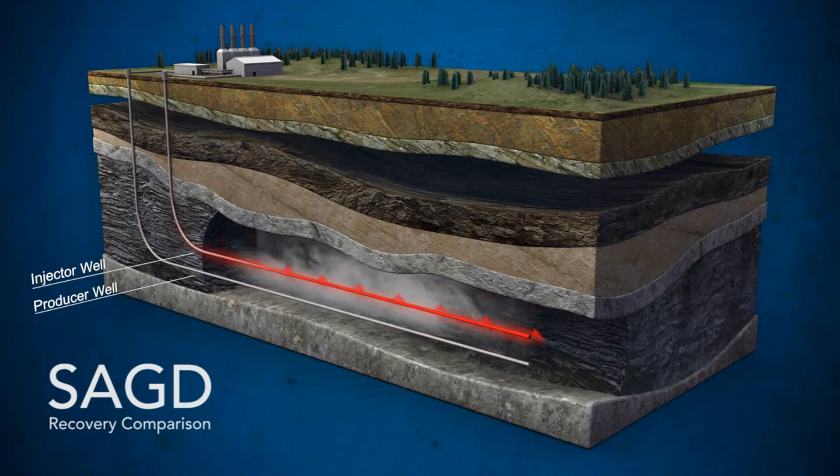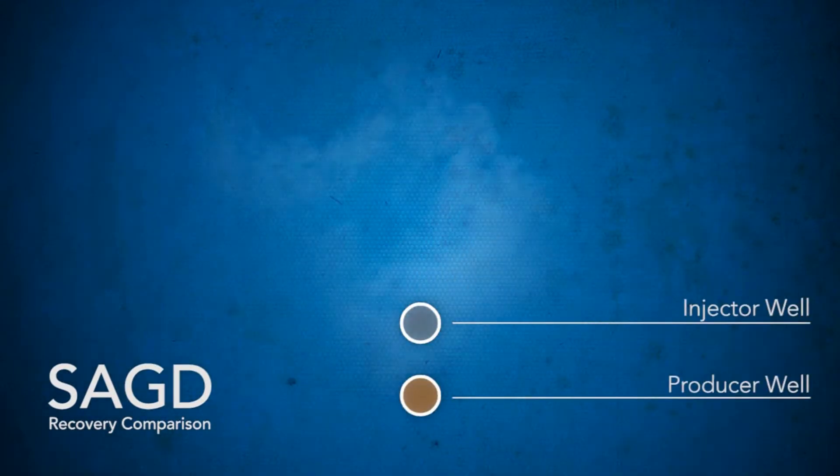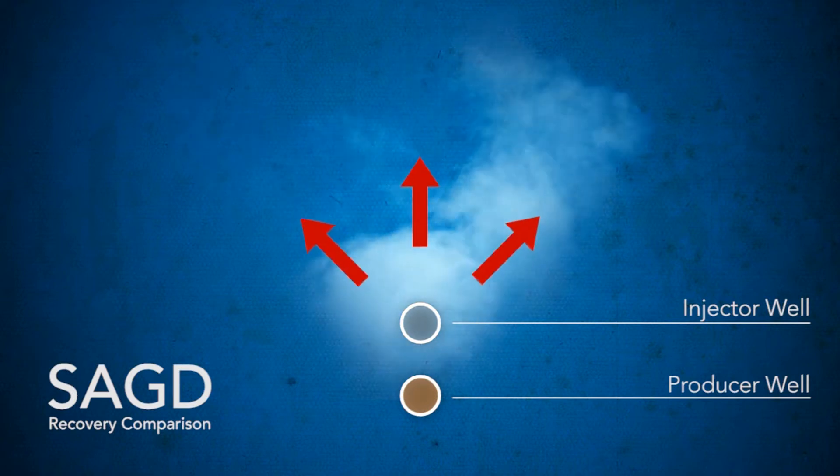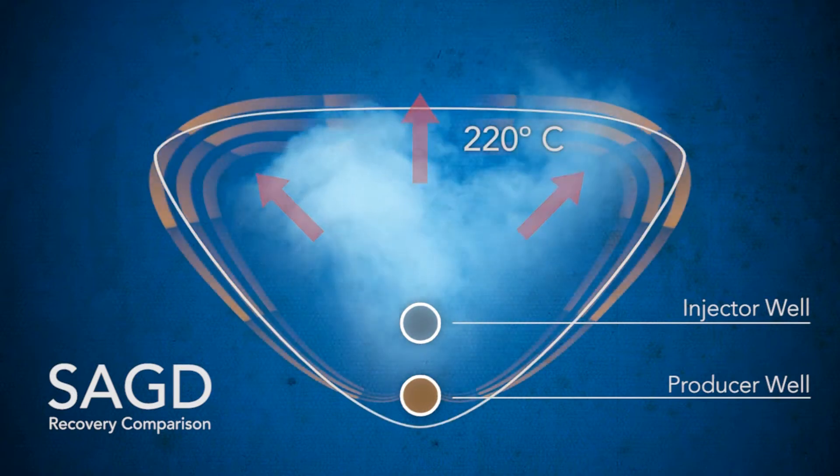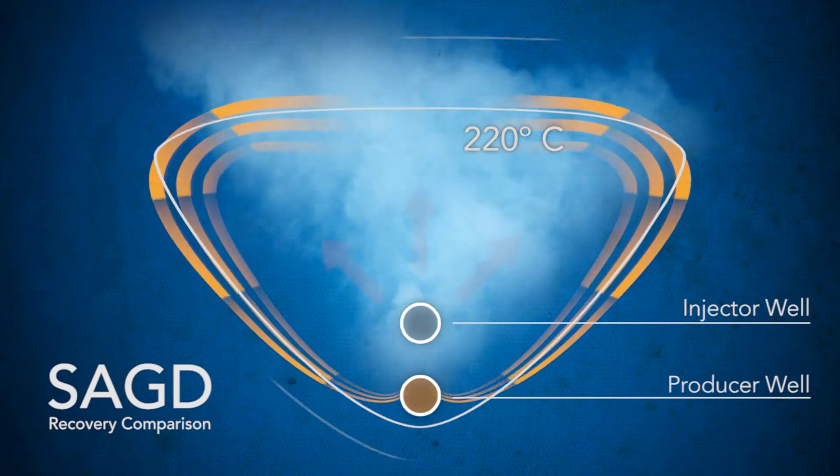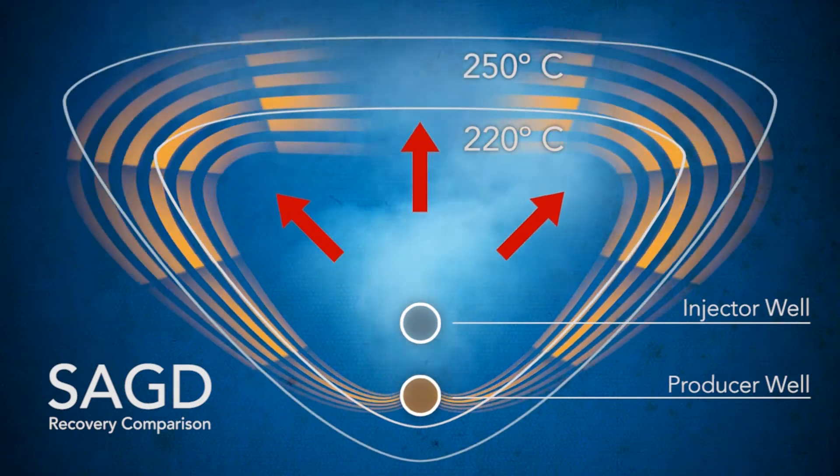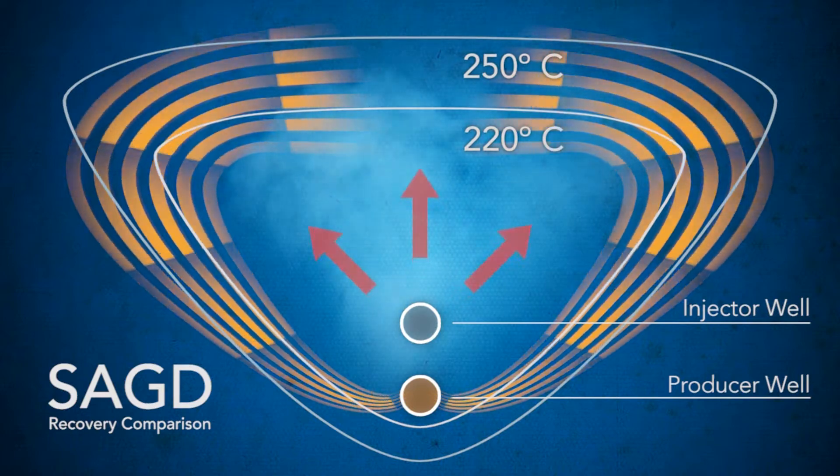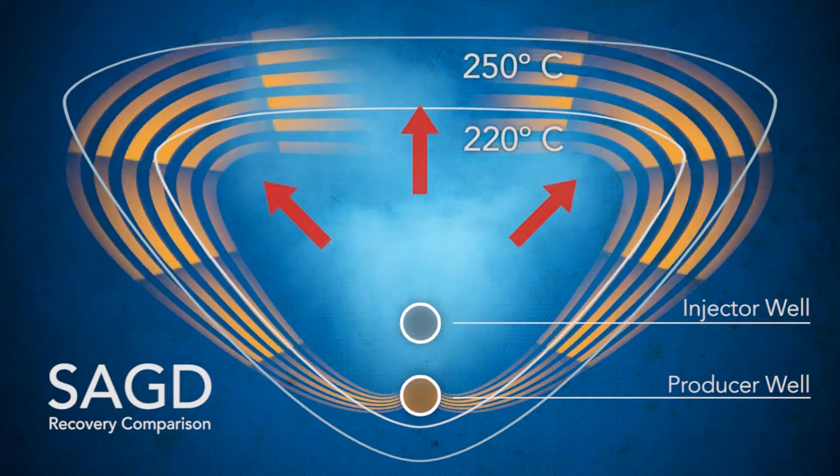Based on field experience, oil sands operators determined that they could increase production from SAG-D wells by up to 50% by increasing fluid temperatures to 250 degrees Centigrade. This is because the higher temperature increases the steam chamber volume around the horizontal well pair, so the bitumen flows more easily into the producing well.